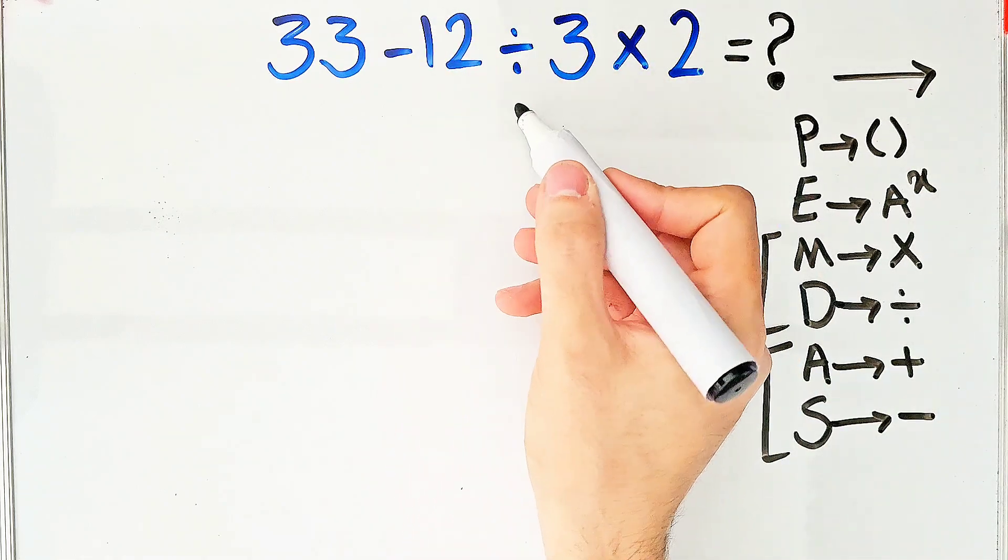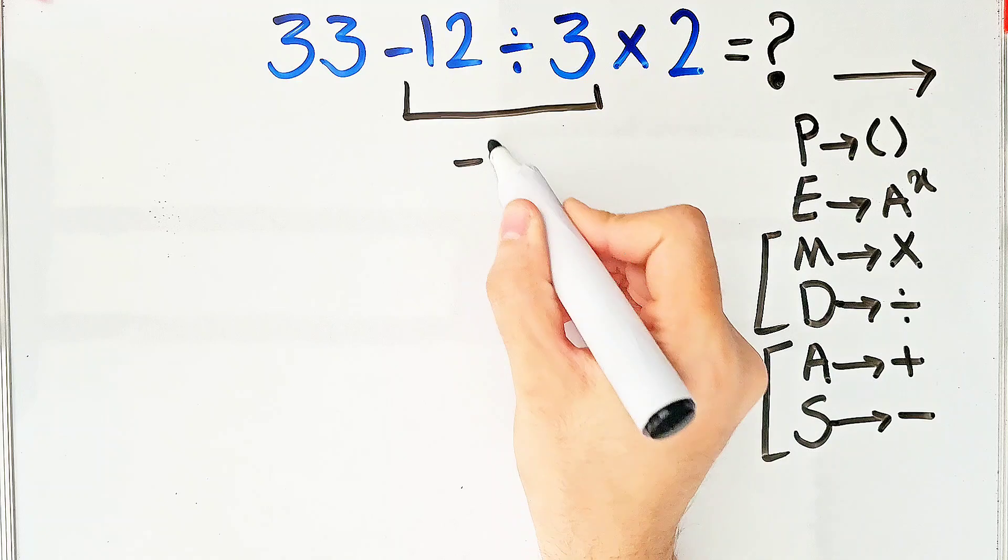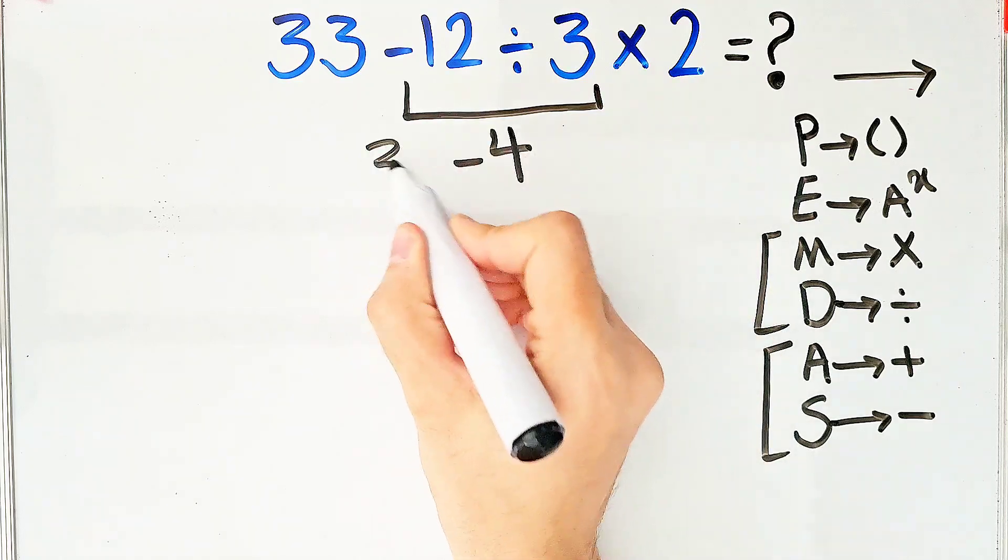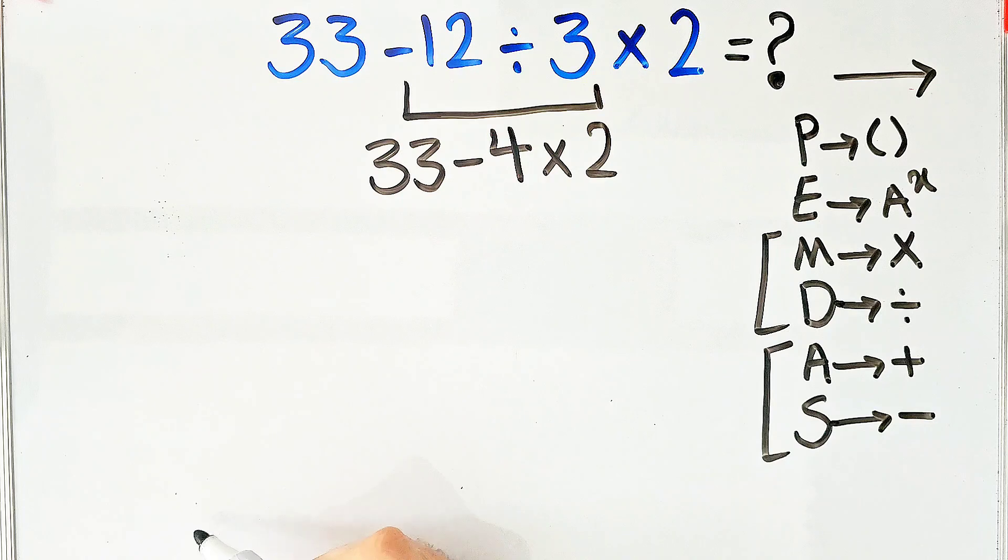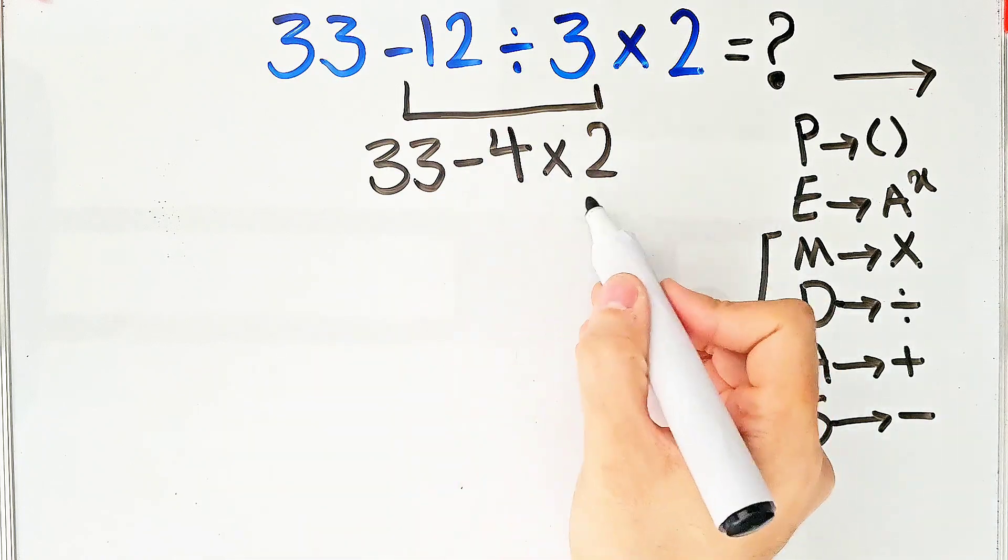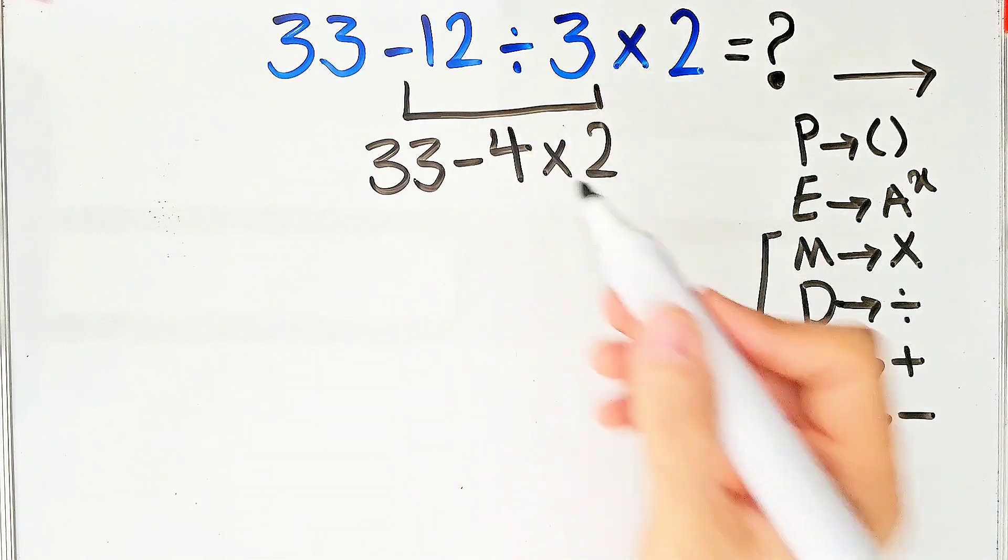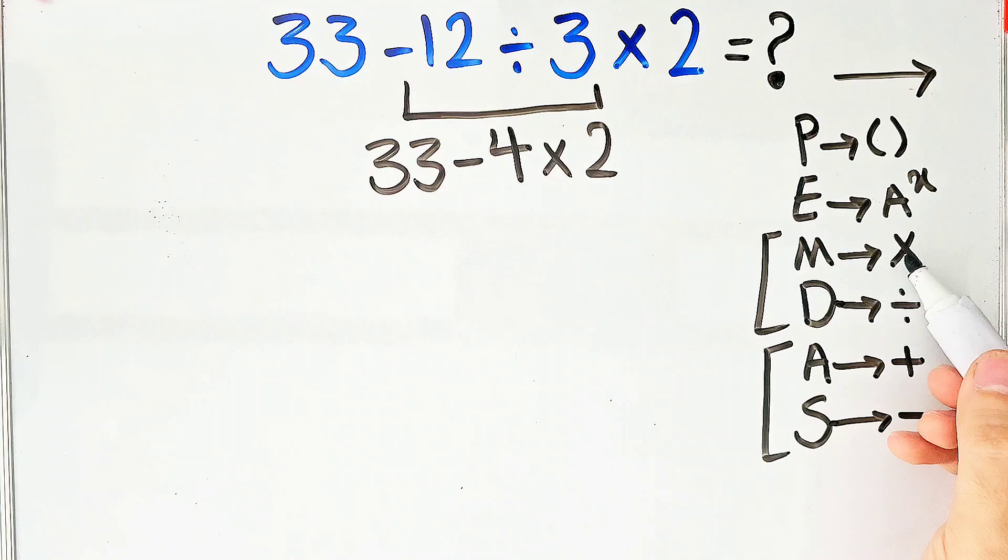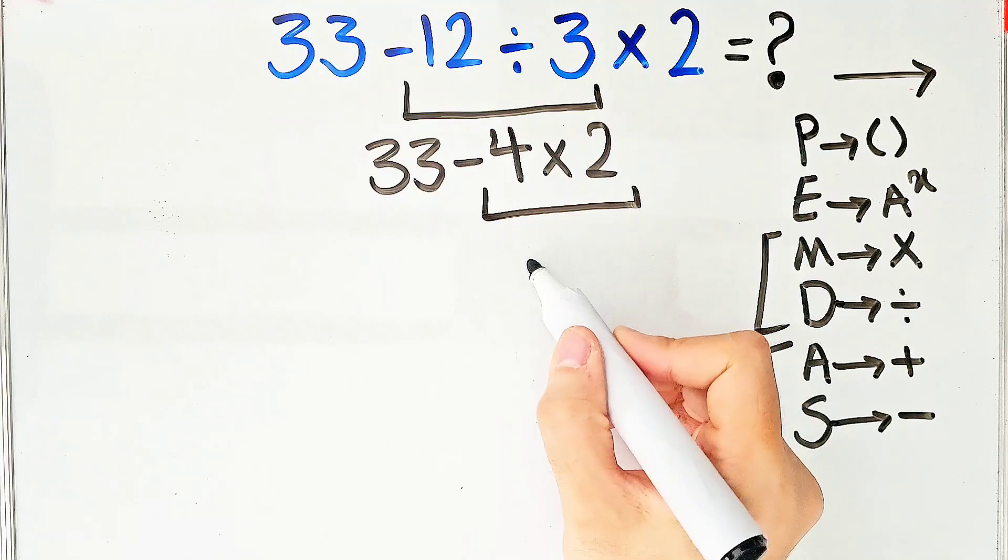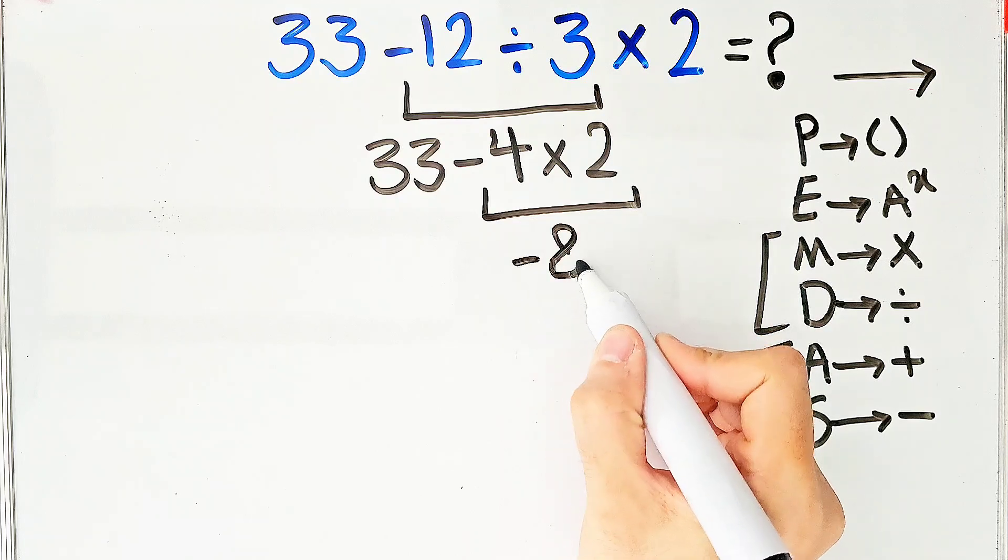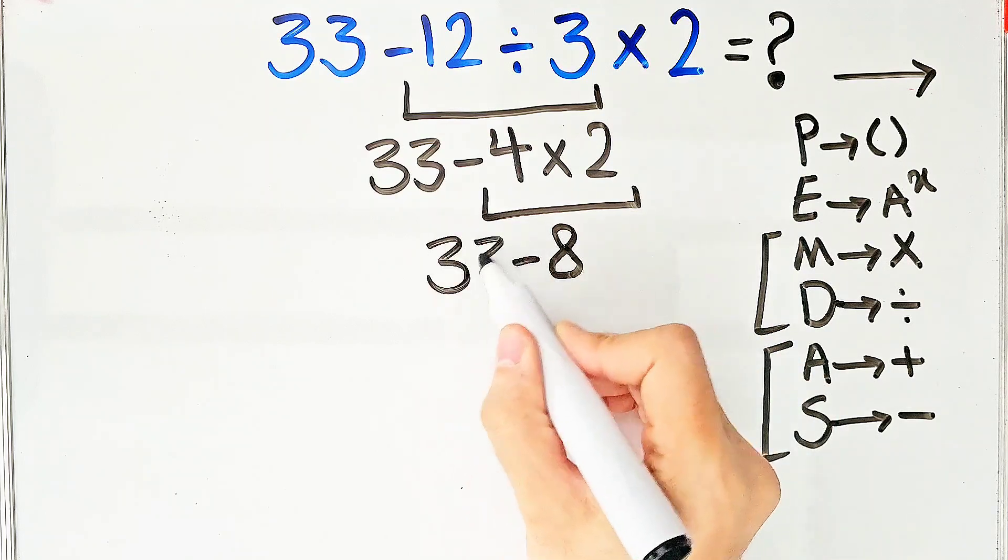According to the PEMDAS rule, first, we simplify this division. Negative 12 divided by 3 equals negative 4. Now we have 33 minus 4, then times 2. Now we have subtraction and multiplication. First, we do this multiplication, because the multiplication has higher priority than subtraction. Negative 4 times 2 equals negative 8, and 33 minus 8 equals 25.